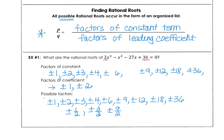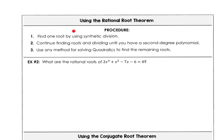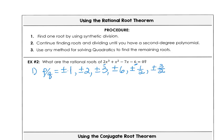This is our possible or potential rational root list, used when finding zeros via synthetic division. For example two, factors of 6 are ±1, ±2, ±3, ±6. Dividing by 1 gives that list; dividing by 2 gives ±1/2 and ±3/2, while 2/2=1 and 6/2=3 are already listed.